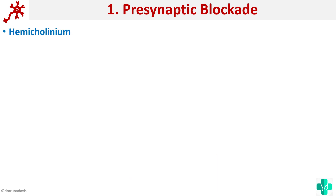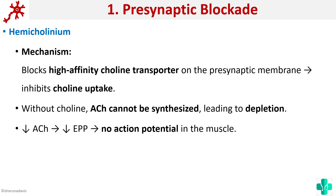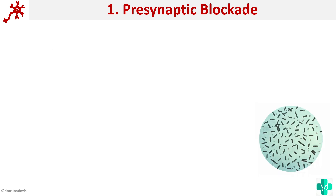The first example is hemicholinium. Hemicholinium is a drug which acts by blocking choline uptake. For the manufacture of acetylcholine we need choline. Hemicholinium inhibits the choline transporter so that choline uptake does not occur. Naturally, acetylcholine cannot be synthesized, and thus there will be no end plate potential and no action potential in the muscle. That is how hemicholinium acts to reduce acetylcholine synthesis.